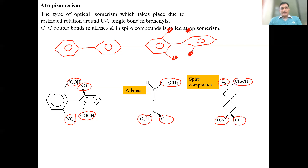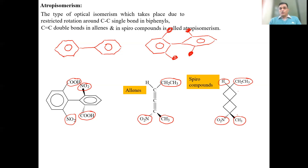To repeat: atropisomerism is a type of optical isomerism which takes place due to restricted rotation. In biphenyls, this restricted rotation occurs around the carbon-carbon single bond by introducing bulky groups at the ortho positions. In allenes, restricted rotation occurs because of the two double bonds. In spiro compounds, rotation can be restricted by introducing bulky groups in both rings. This is how the property of atropisomerism is studied.